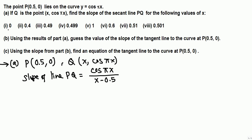We are asked to find the slope at different x values: 0, 0.4, 0.49, 0.499 — these are increasing and approaching 0.5. On the other hand, 1, 0.6, 0.51, 0.501 — these are decreasing toward 0.5. In any case, we need to evaluate the slope formula at each of these x values.